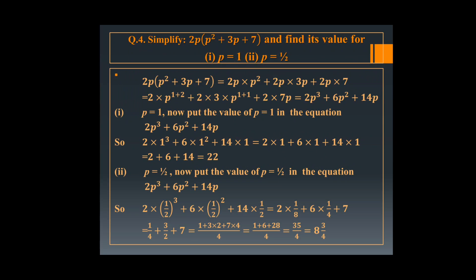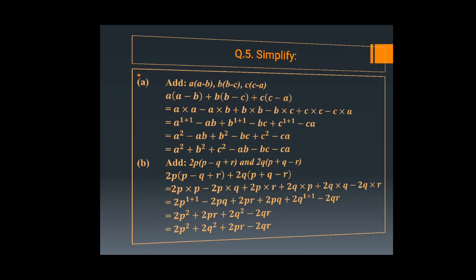Now evaluating at p equal to 1 upon 2: and 14p gives 14 into 1 upon 2. Since 1 upon 2 cube equals 1 upon 8, and 1 upon 2 square equals 1 upon 4, after simplifying we get 1 upon 4 plus 3 upon 2 plus 7. Since 1 upon 4 and 3 upon 2 are fractions, we take the LCM of 4 and 2, and after that we get the final answer.